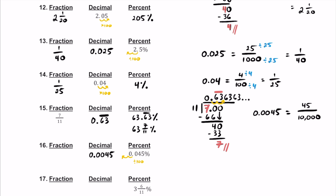Now let's simplify this. We can divide both by 5, top and bottom. If we divide top and bottom by 5, we're going to end up with 9 over 2,000. So this is going to be a pretty small fraction — 9 over 2,000.